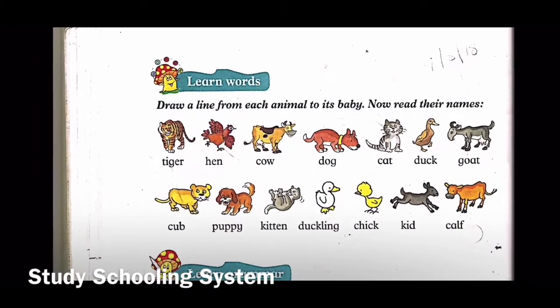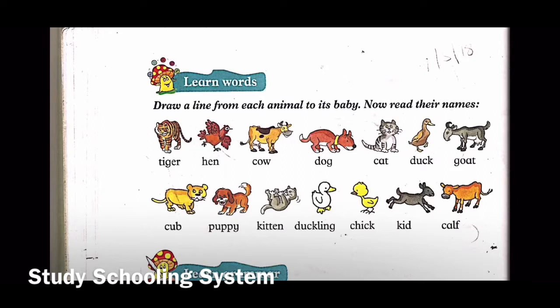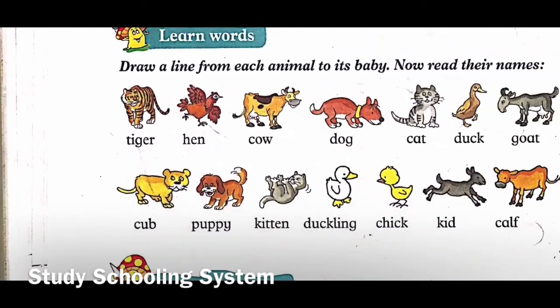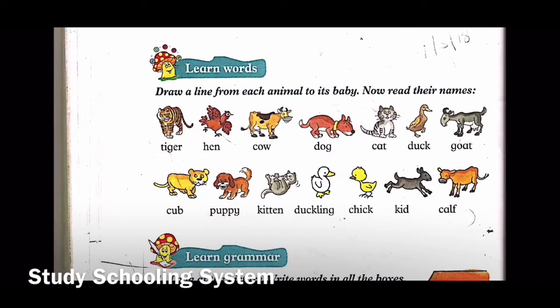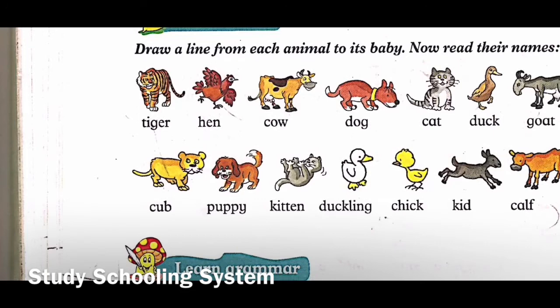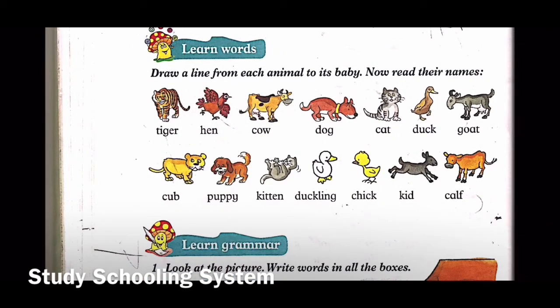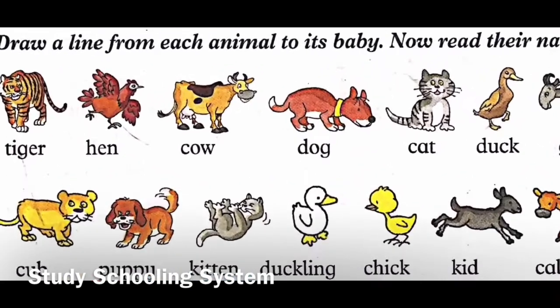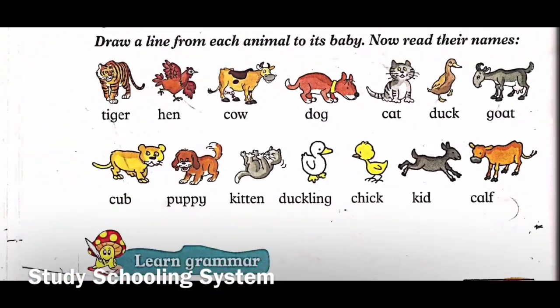On the next page we have the exercise 'Learn Words' - draw a line from each animal to its baby and read their names. You will use a pencil and a ruler to make a straight line. For example, the first animal is tiger - what is its baby called? Yes, a cub. So draw a straight line from tiger to cub. Next, hen - its baby is called a chick. Draw a line from hen to chick.